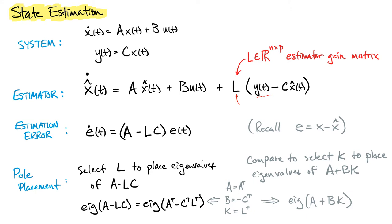Very similar to state feedback, in state estimation we get an equation that requires the stability of the matrix A minus LC. This A minus LC matrix is the closed-loop analogous matrix — it represents the estimation error dynamics. We would like to stabilize that because if the estimation error goes to zero, our state and our estimate are nearly the same thing. So it makes sense to place the eigenvalues of A minus LC to guarantee convergence and stability of this estimation error.